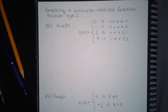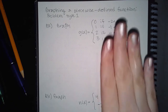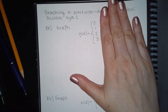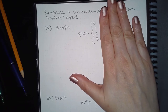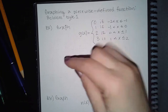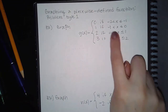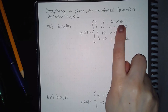Here it has four different functions that define the graph of g of x. Notice that each of these functions are just constants, and when you're graphing a constant, it's just a horizontal line at that particular y value. The problem is that I only have pieces of the horizontal line — instead of it going all the way left and right with arrows, I'm only going to include it for the given x values.